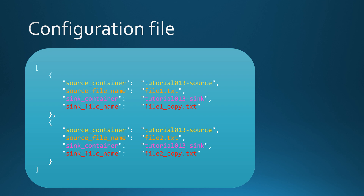In these objects we have four properties, all the same across each object. First, we have a property called source container, specifying the source container for our data. Then we have source file name, telling us the source file name in that container. Then we have a sink container property specifying the sink container for our copy activity. And last, we have the sink file name — what the file name will be after the copy has executed. In this case, we're adding underscore copy to the file name so we know it has been copied, and we're copying it from the source container to the sink container, for two files.